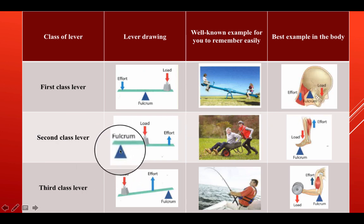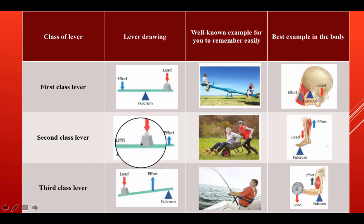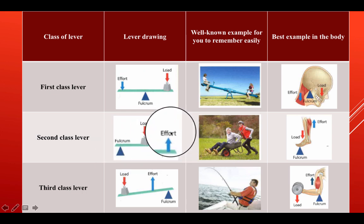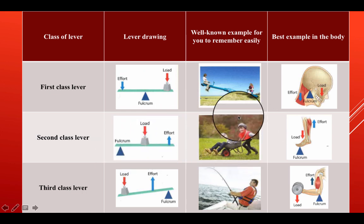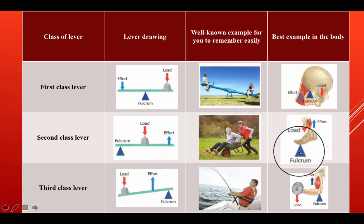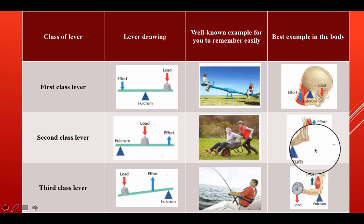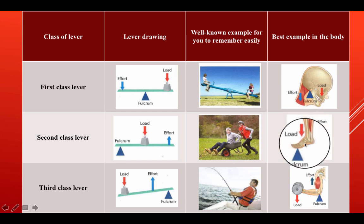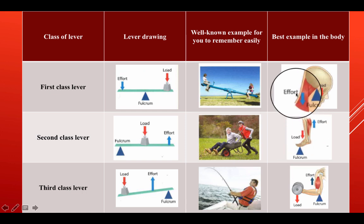Second class lever: the fulcrum is at the end, the load is in the middle and the effort is applied upwards. A well-known example would be a wheelbarrow. In the body, this is when we jump — the fulcrum would be the base of your toes, the load is coming down and the effort as a result would push you upwards.